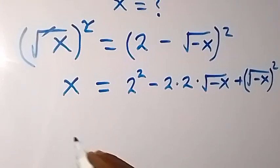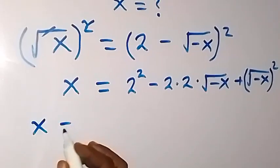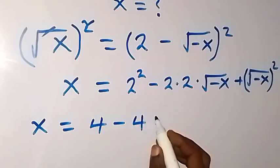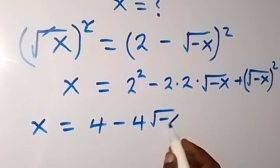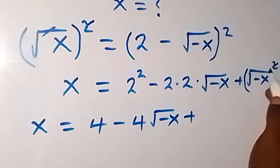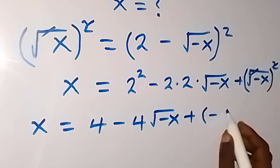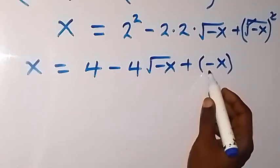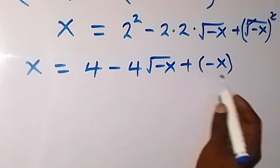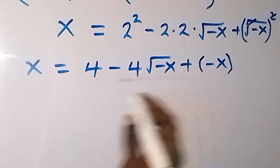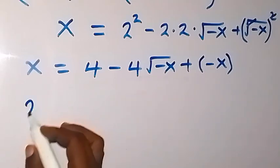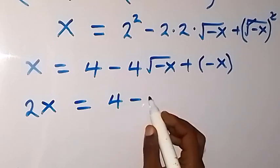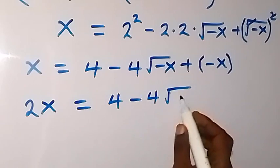From here, x equals 2 squared, which is 4, minus 4 times root of minus x, plus the square of root minus x, which cancels to give minus x. Taking minus x to the left side gives us x plus x, which is 2x, equals 4 minus 4 root of minus x.